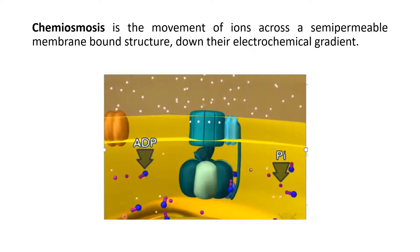In this section of the video lecture, we will talk about the movement of ions across a semi-permeable membrane bound structure that is a protein. It will create an electrochemical gradient, and this is called chemiosmosis. I'm going to start by showing you a movie about this, and then I'm going to highlight important ideas that can be useful for your test.